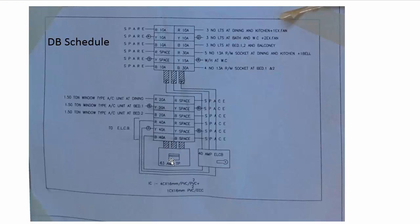The DB schedule shows the main breaker supplying a set of breakers, with one three-pole breaker tapping off to an RCD or ELCB which supplies the rest of the loads. Each entry in the figure shows the actual load connected to each breaker. For example, the top MCB, a single pole 10A MCB, protects three lights at dining and kitchen and one exhaust fan. The second MCB protects three lights at bath and water closet plus two exhaust fans and so on. We will go into more detail by looking at the plan of the flat.